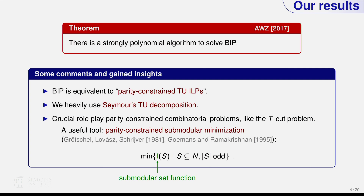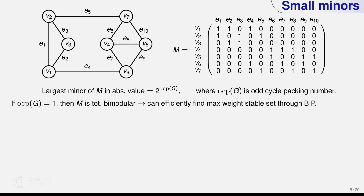Let me give some intuition about bounded minors. Consider a non-directed graph and its vertex-edge incidence matrix. If the graph is bipartite, the corresponding matrix is TU and the highest minor will be one. If not, you can find odd cycles. From a triangle — an odd cycle — you can look at the vertex-edge incidence matrix minor corresponding to those edges.